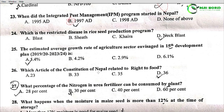Question 24: Which is the restricted disease in dry seed production program? Options: Blast, Seat, Khaira, Neckblast. The correct answer is Option D: Neckblast.